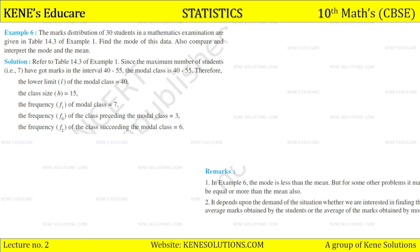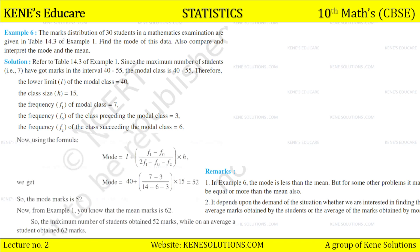Substituting the values in the formula: Mode = 40 + [(7 − 3) / (2×7 − 3 − 6)] × 15 = 52. So the mode marks is 52. From example 1 we know the mean marks is 62. Therefore the maximum number of students obtained 52 marks while on average students obtain 62 marks.